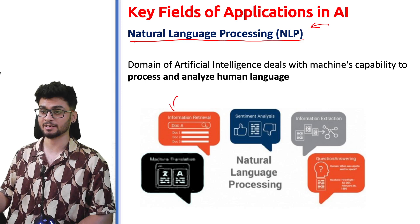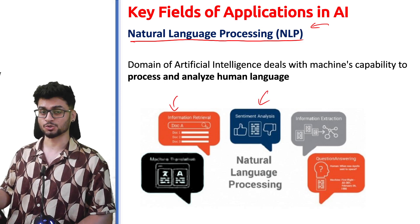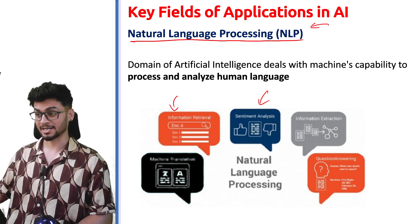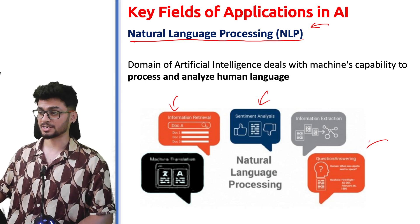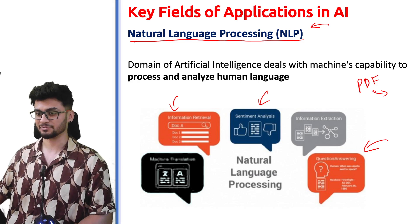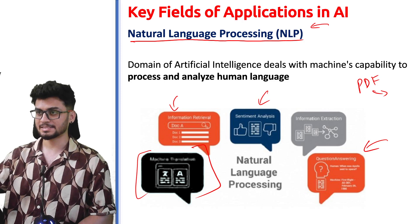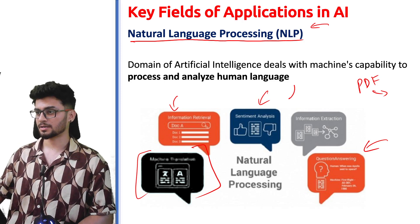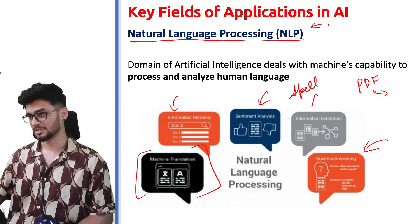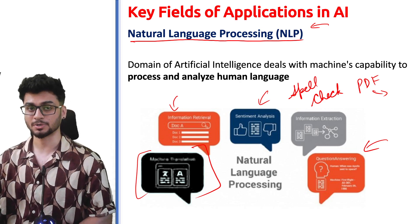Natural language processing can be used to classify text as good or bad, happy or sad. You can also do question answering — you can put your PDF into an NLP system and ask questions on it. There is also language translation. Spell check and correction of grammatical errors also come under natural language processing.